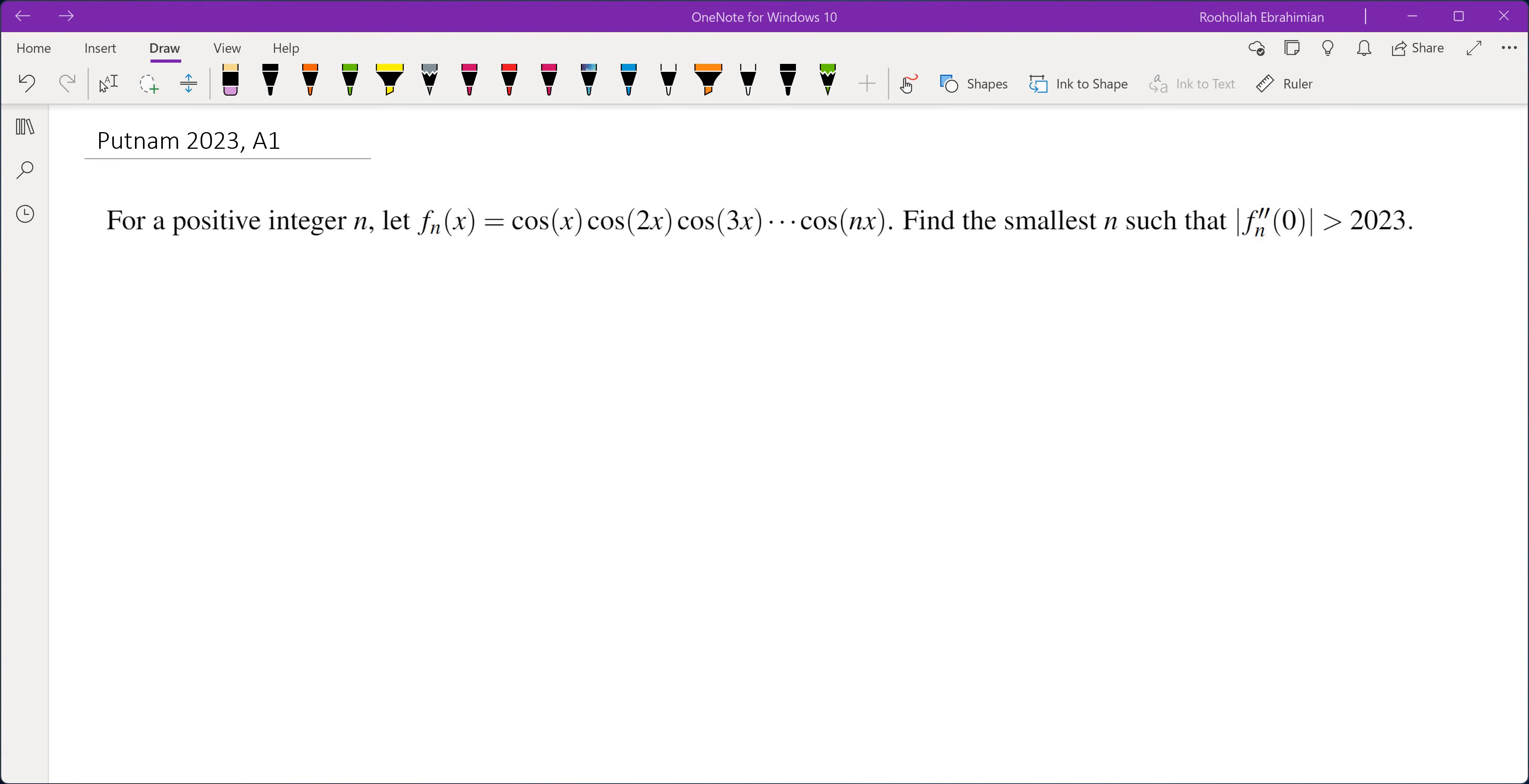Hello, in this video we're going to go over problem A1 from Putnam 2023. For a positive integer n, let f_n(x) be the product of cos(x), cos(2x), all the way to cos(nx). Find the smallest n such that f_n''(0) is greater than 2023.